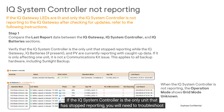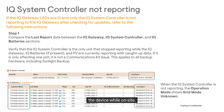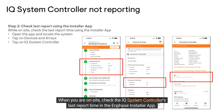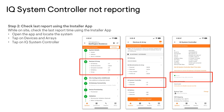If the IQ system controller is the only unit that has stopped reporting, you will need to troubleshoot the device while on-site. When you are on-site, check the IQ system controller's last report time in the Enphase installer app.